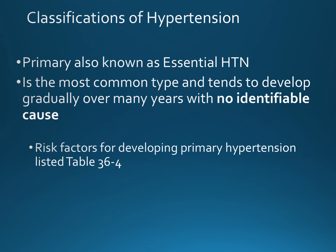Risk factors for developing primary hypertension can include family history, African American ethnicity, hyperlipidemia, smoking, age, being postmenopausal, overweight, sedentary, excessive alcohol use, excessive stress, and low levels of potassium, calcium, or magnesium. Although all these variables are associated with hypertension, in primary or essential hypertension the specific cause is still said to be undetermined.